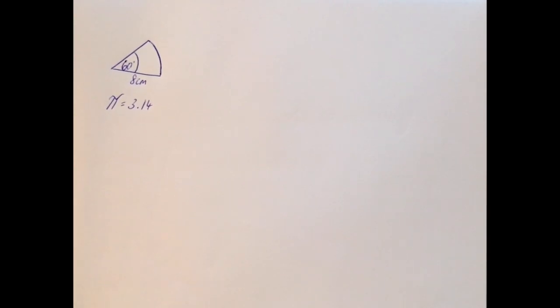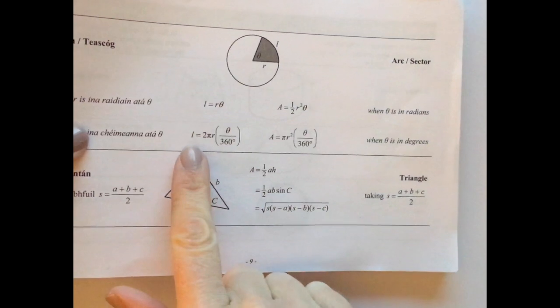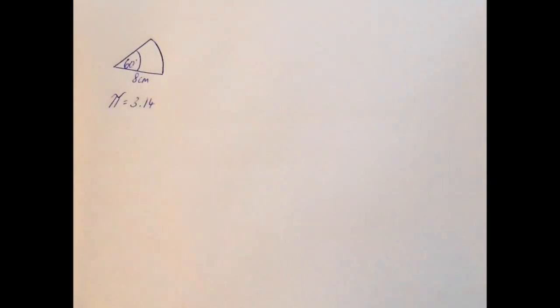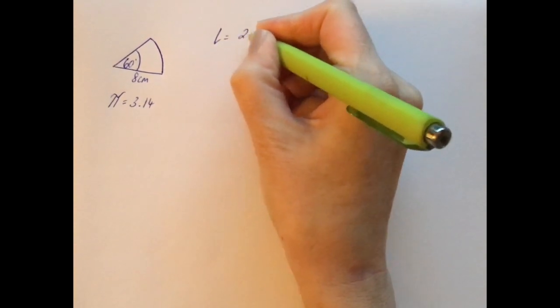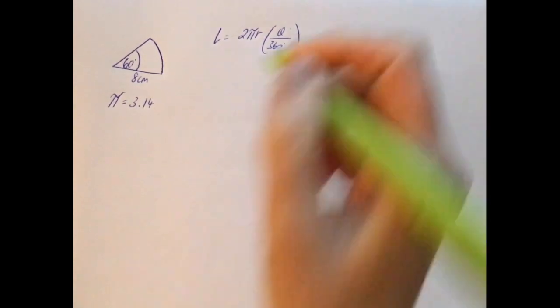So now we're going to get the arc length. So we're going to go to our log tables and we're going to take down the formula for the arc length, which is this one here. So that is L equals 2πr, and then theta over 360.